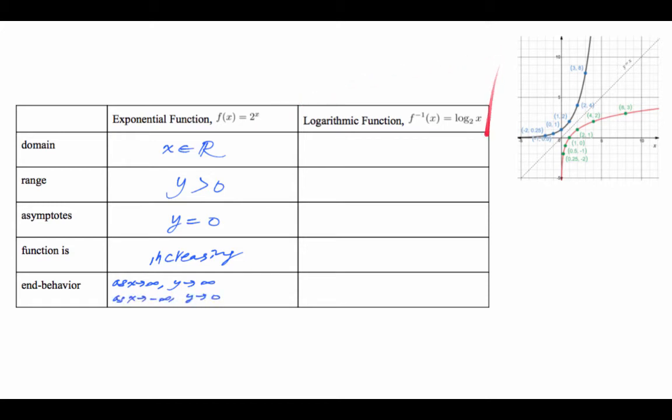You should have gotten these values. As you can tell, the black graph right here, the x is all real numbers, and the y values appear to be greater than 0. And then there seems to be horizontal asymptote at y equal to 0, right there. And the function is increasing. As x goes to infinity, y is going up, so it's positive infinity. As x goes to negative infinity, x goes to the left, y is approaching 0.